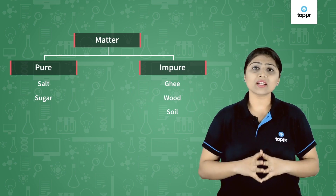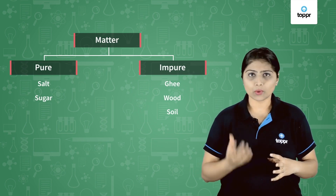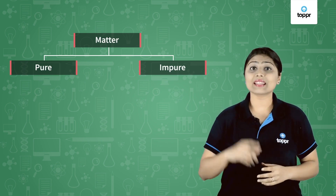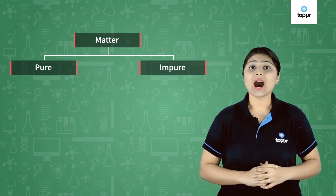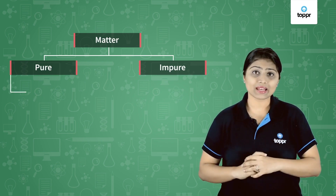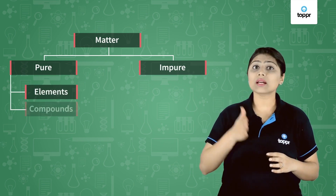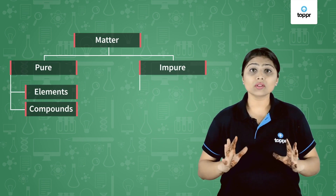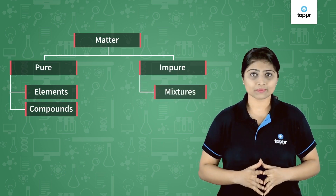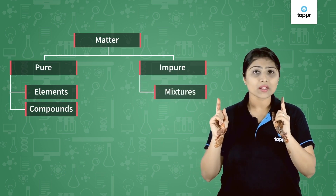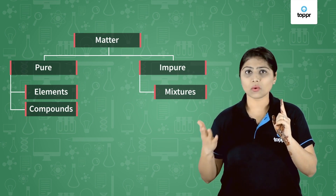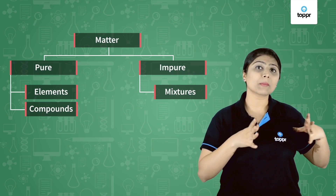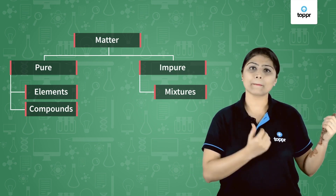Now we've understood which things are said to be pure and which are impure. Pure substances are classified as elements or compounds, and impure substances are all called mixtures. That means all pure substances can either be elements or compounds, and all impure matter is a mixture.